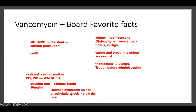Because it's a vesicant, it can cause extravasation. It also causes hypersensitivity — an allergic-type reaction. And that is what Red Man Syndrome is: it's a hypersensitivity reaction, not a true allergic reaction.